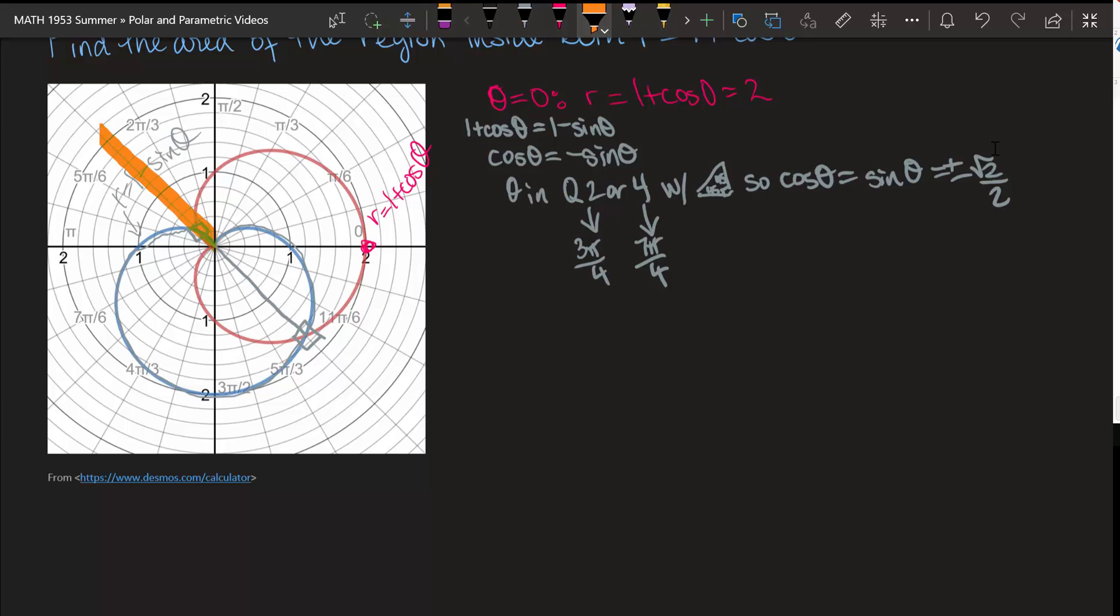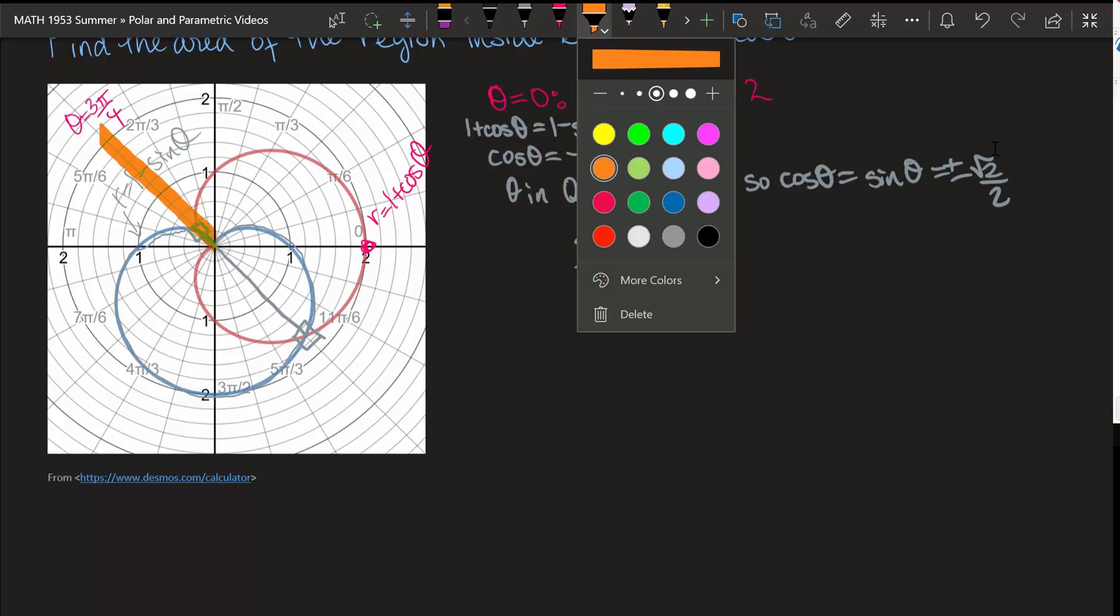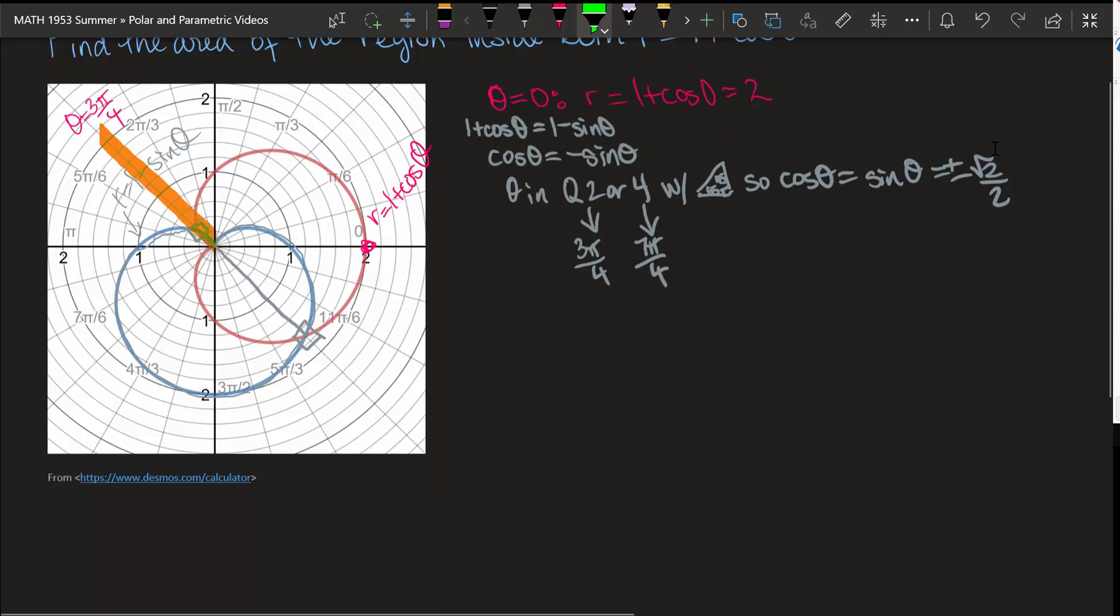This line is the line for theta equals 3 pi over 4. And then the other side of that line down here, in that fourth quadrant, that is the line for theta equals 7 pi over 4.